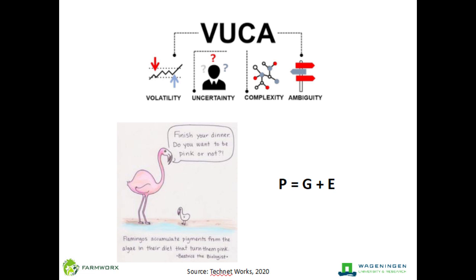For example, you can see the difference in the color of the dark pinkish flamingo versus one slowly becoming an adult. The pigments from the algae in their diet turn them pink. There are a wide variety of contexts we could understand by simply exploring this formula using sensing approaches and sensing technologies.